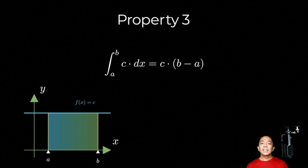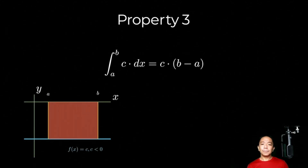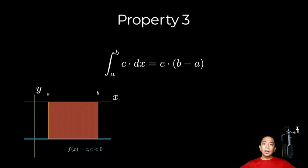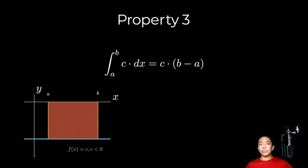So consistent siya. Now, if our c is negative, then that means yung c will be below the x-axis. It's still also a rectangle, but ngayon yung height na gagamitin natin will be a negative value. It's still also equal to c times b minus a, but like we said, the definite integral can be negative. Then for this case, the definite integral is also negative.